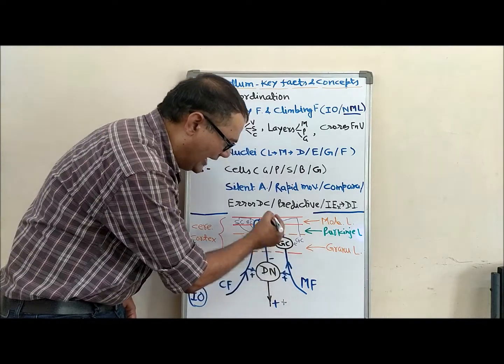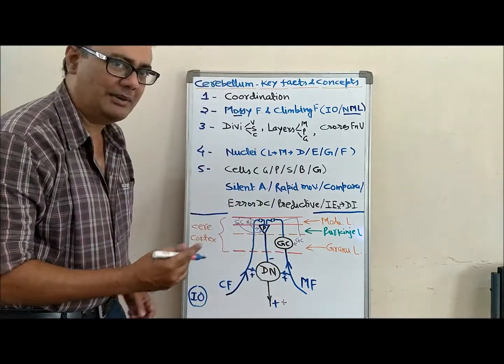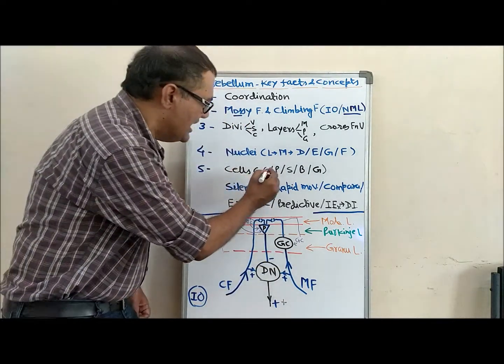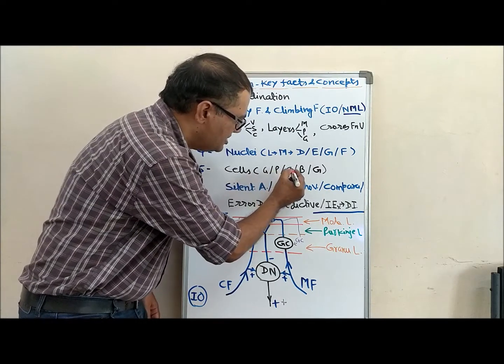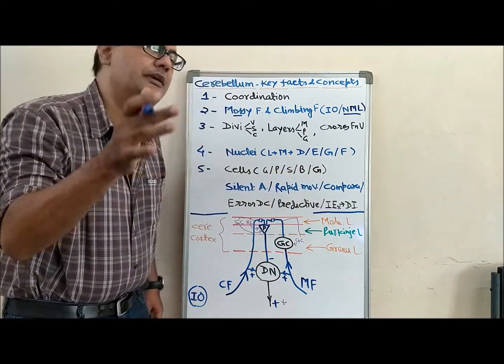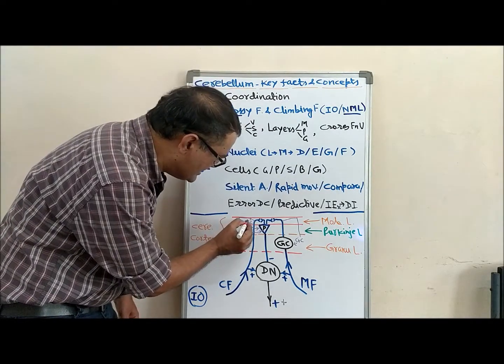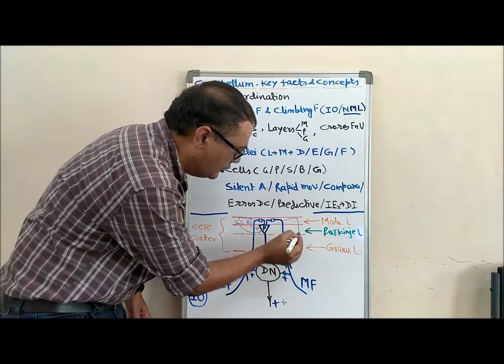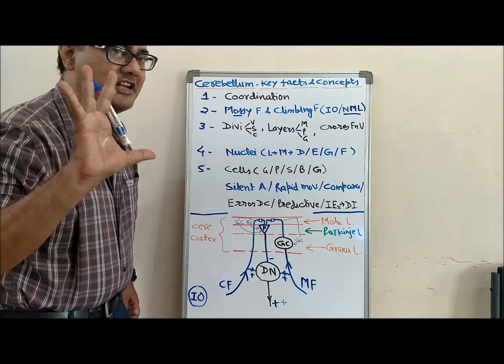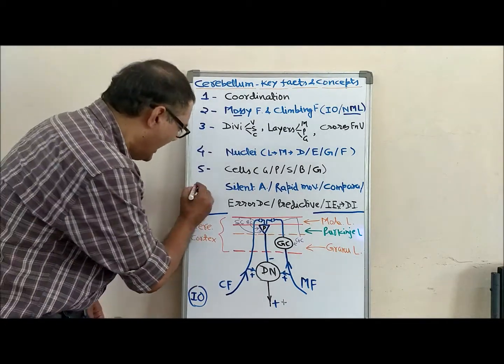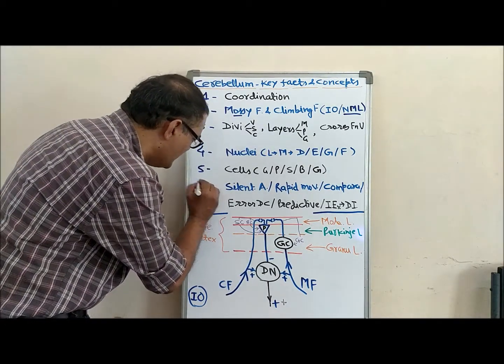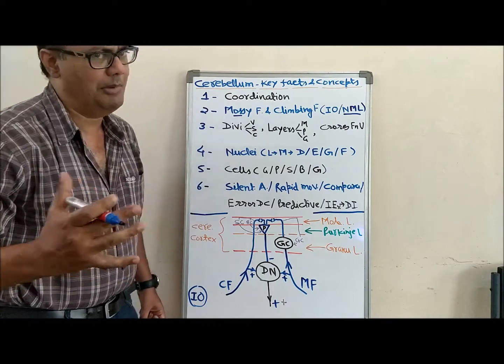Then we have three types of inhibitory interneurons: stellate cells, basket cells, and Golgi cells. So five types of cells. There are six special concepts about cerebellum.